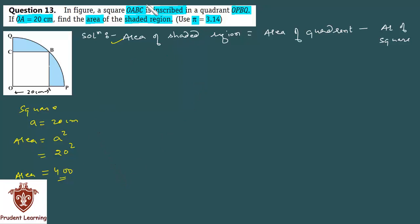अब quadrant की बात करें. Quadrant जो होता है वो एक sector होता है — quadrant is a sector whose angle is 90 degrees. तो angle तो आपको मालूम है, लेकिन quadrant का area find करने के लिए आपको radius चाहिए. यहाँ पर radius question में कहीं given नहीं है, तो sector का radius find करने के लिए एक logic लगाना पड़ेगा.